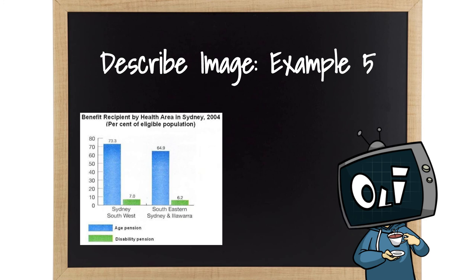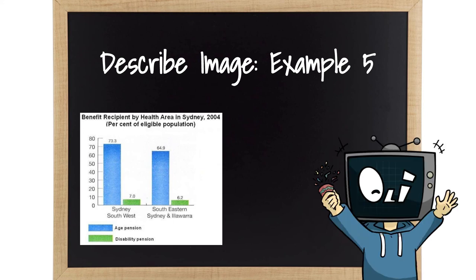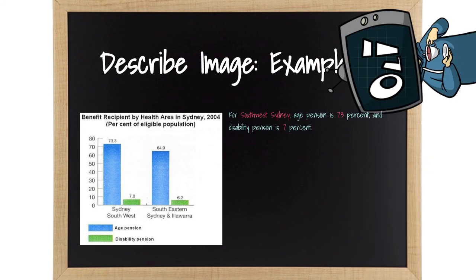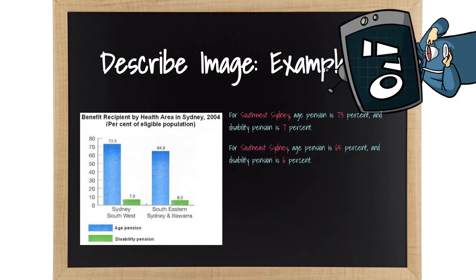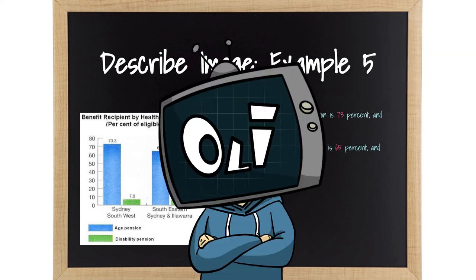This is a good example for you to find a simple sentence that describes one of the categories, and then just change out a few words, and voila, you have another perfectly functioning sentence. Like this. For Southwest Sydney, age pension is 73%, and disability pension is 7%. Are you ready for the magic to happen? Here is the next sentence. For Southeast Sydney, age pension is 65%, and disability pension is 6%. Promise me that you can at least do this before actually booking the test.